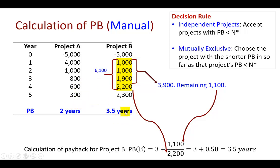If the projects are mutually exclusive, we choose one and drop the other. For example, the firm is considering a Ford truck and a similar GM truck — only one is needed. The one that should be accepted is the one with the shorter payback period, which is Project A, provided it meets the basic criterion of having a payback below the firm's threshold.